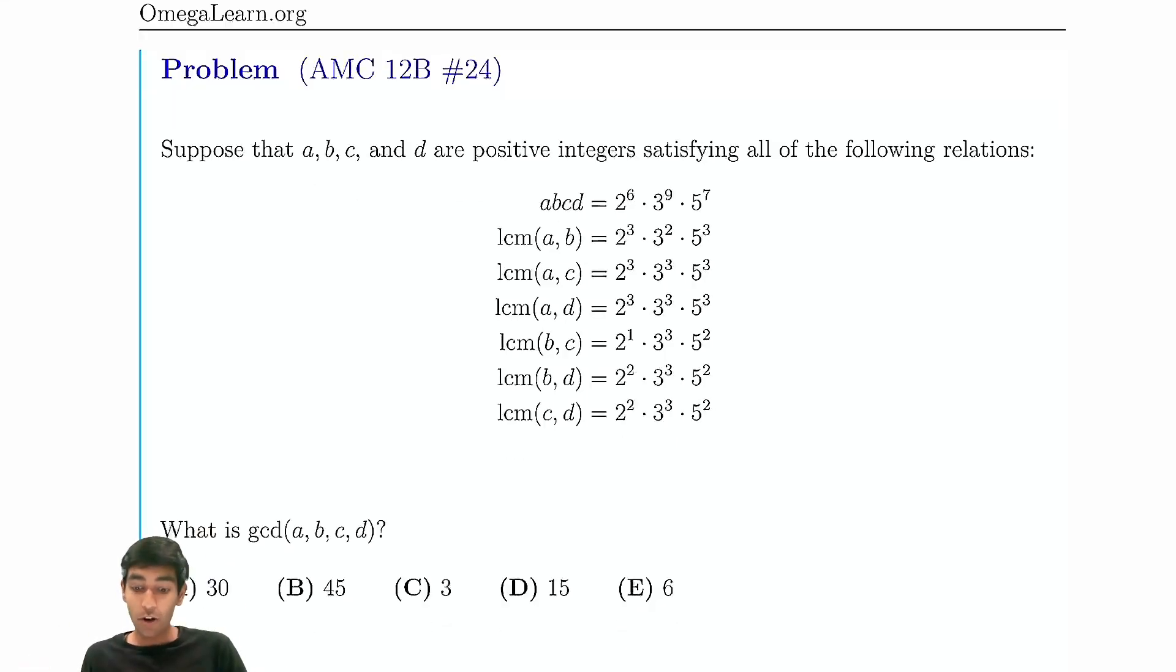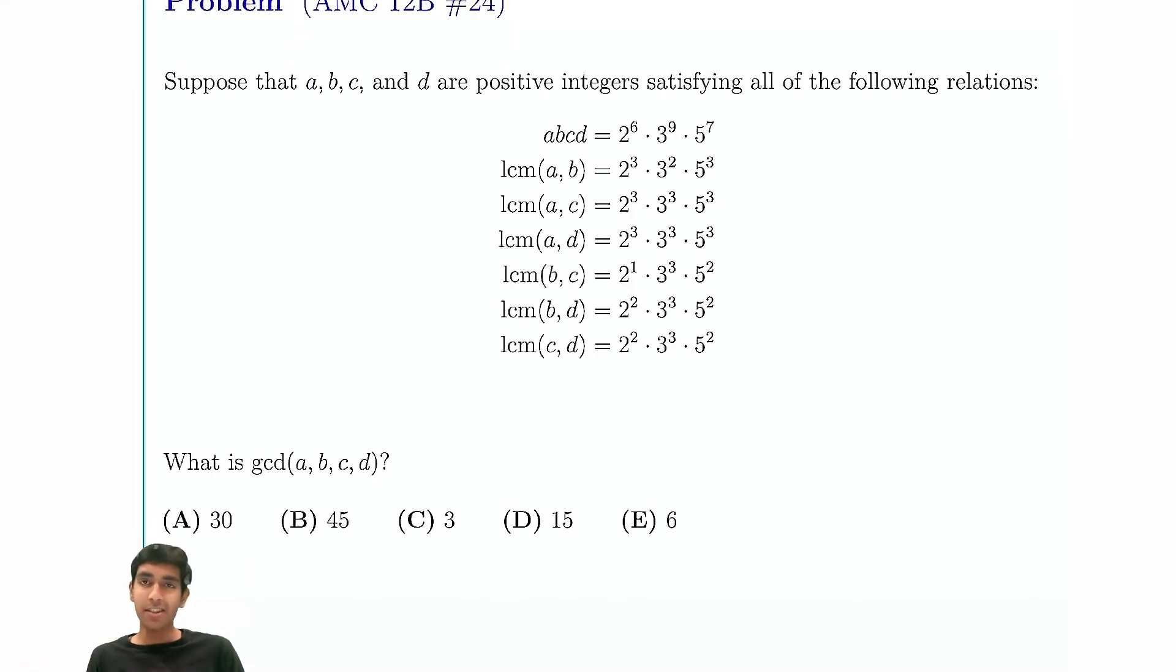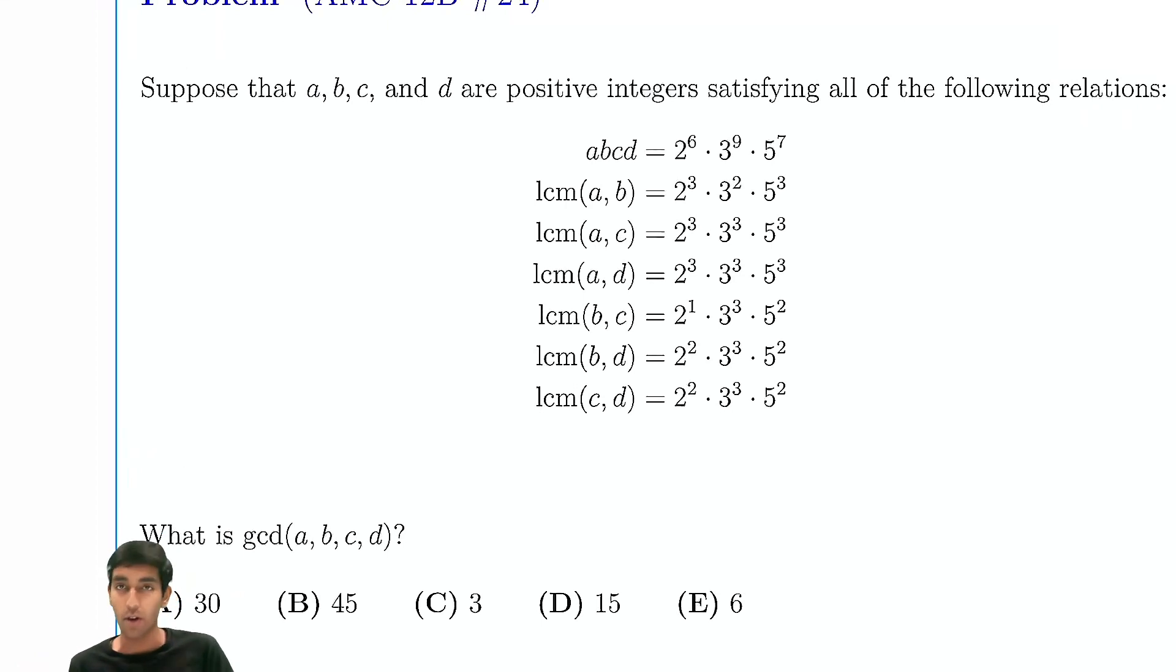Now let's explore how to solve number 24 on the AMC 12B, which really is not that hard for number 24. So we are given the value of ABCD. Of course, they're positive integers. And we're also given the LCM of AB, AC, AD, BC, BD, and CD. The question is, what is GCD of ABCD?